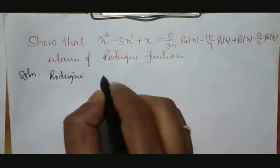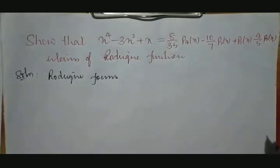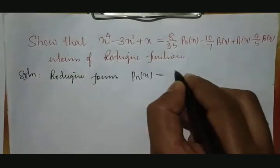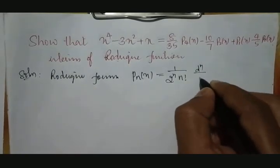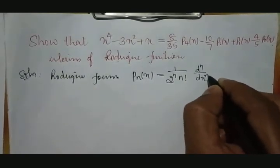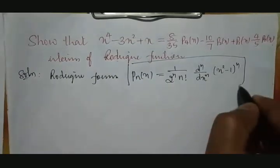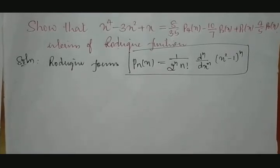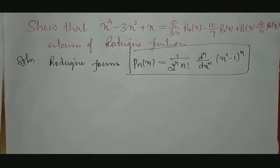The Rodrigues formula is based on the Legendre Polynomial Pₙ(x) only. That is, Pₙ(x) is equal to 1 divided by 2ⁿ into n factorial, times the nth derivative with respect to x of (x² - 1)ⁿ. This is the Rodrigues equation. Using this equation we can get polynomials in terms of Pₙ(x) by substituting values of n.